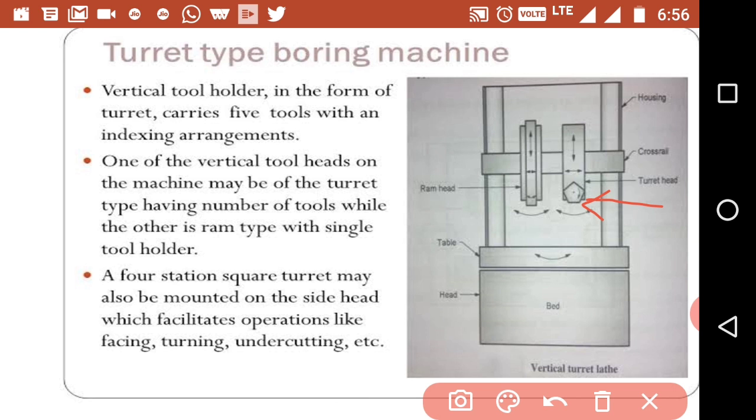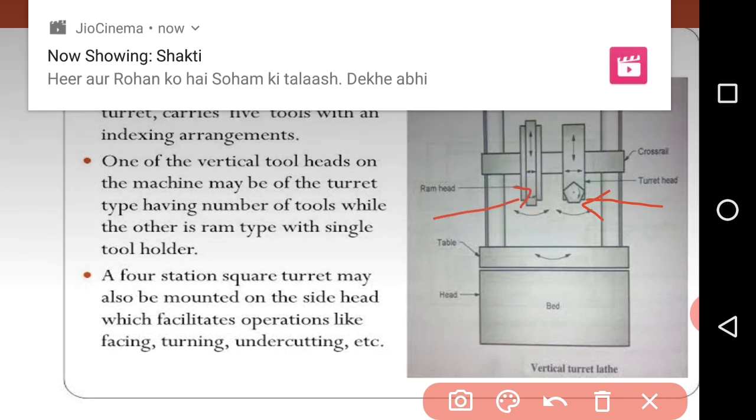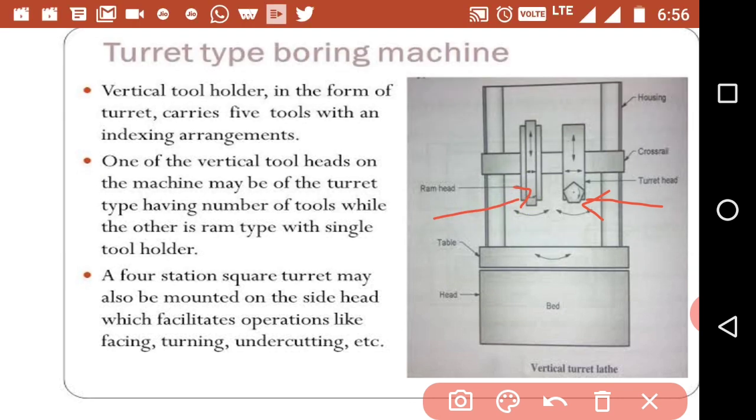Another ram head is also mounted on which a single tool is held. The other parts are the same. This machine is suitable for boring, turning railroad wheels, piston rings, gear blanks, etc. So this was about vertical boring machine. Thank you.